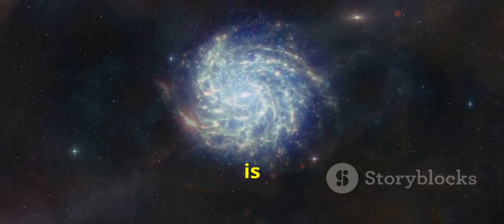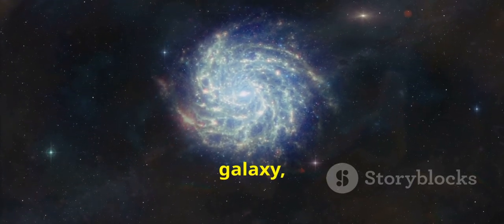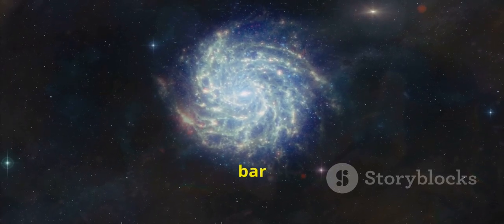Andromeda is a barred spiral galaxy, which means it has a spiral shape with a central bar structure.